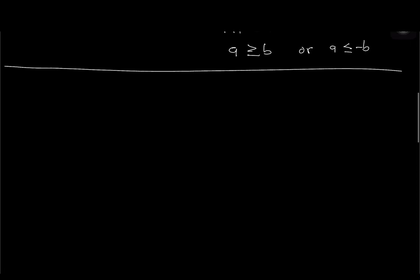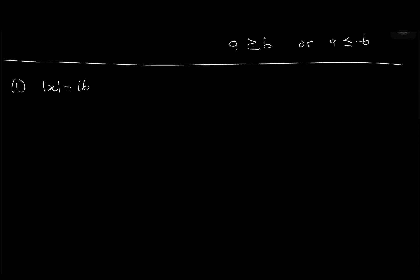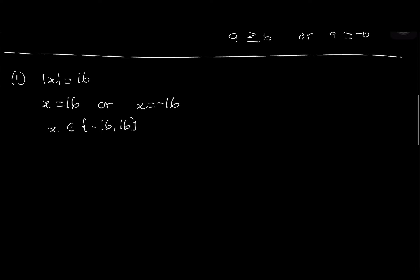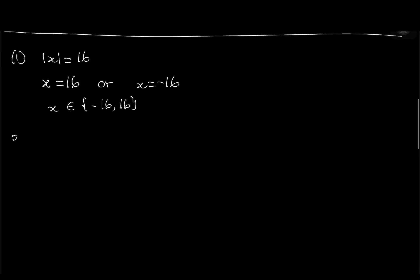The first question is the absolute of x equal to 16. Knowing what I've already said, we have two statements: x equals 16 or x equals negative 16. The solution set is x belonging to the set {negative 16, 16}. Note that you have to use curly brackets for equations.